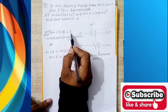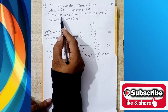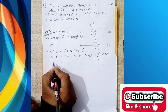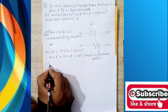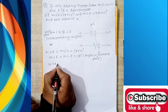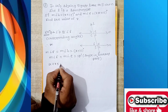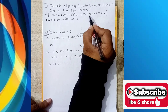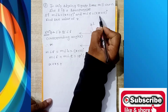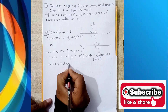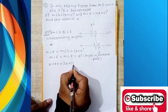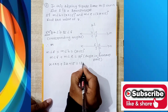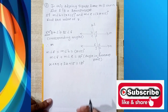Measure of angle F and measure of angle E form a linear pair. For a linear pair, measure of angle F plus measure of angle E equals 180 degrees. The reason is: angles in a linear pair sum to 180 degrees.